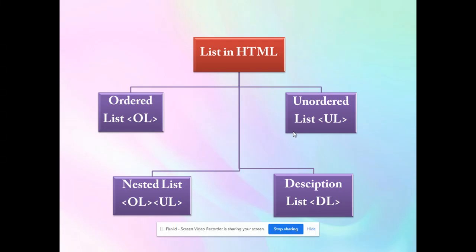In an ordered list, the 'ol' tag stands for ordered list. In an ordered list we have items in a particular sequence. For example, if I want to make a list of students sorted by roll number, that's an ordered list. But if I want to write the names of five fruits, there is no particular order, so that is an unordered list.